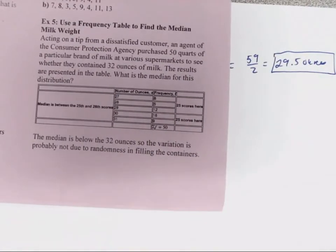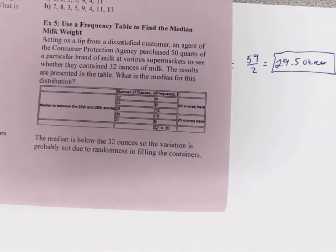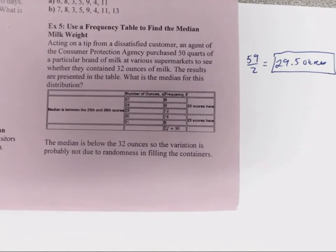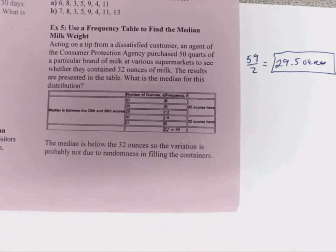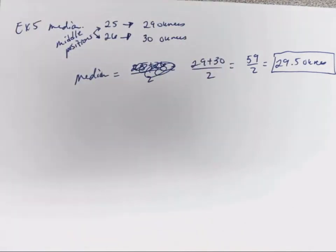The median is actually below 32 ounces. 29.5 is below the 32 ounces, and it's off by enough. It's not like at 31 that the variation is probably not due to randomness in filling containers. They would have to really do a little more investigation to see what's going on.